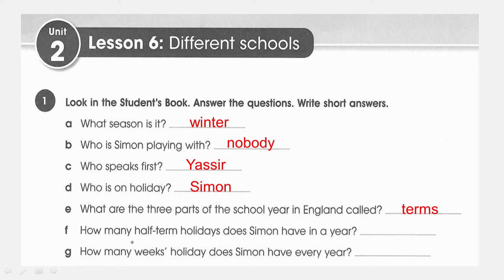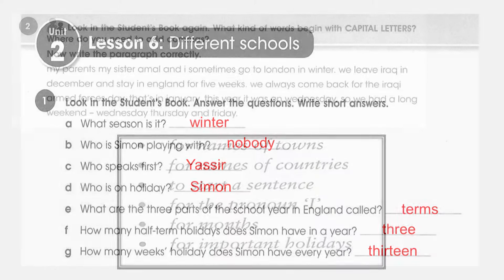Question: How many half term holidays does Simon have in a year? How many half term holidays does he have? Three. Question: How many weeks holiday does Simon have every year? Here we have 13 — if you add up all the weekly holidays it comes to thirteen.